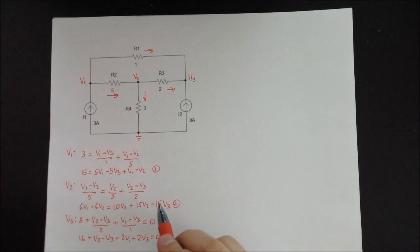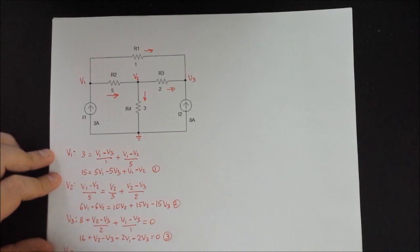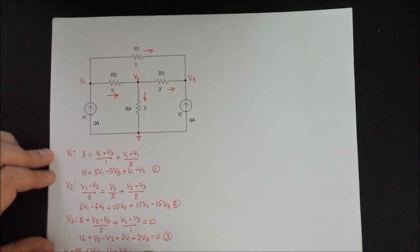So obviously I'm going to assume that you know how to solve a series of equations. So in this case you have three equations, three unknowns, and what you're going to come up with is that V1 is equal to 48.625V, V2 is equal to 33V, and V3 is equal to 48.75V.